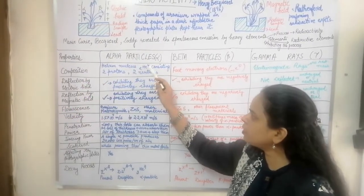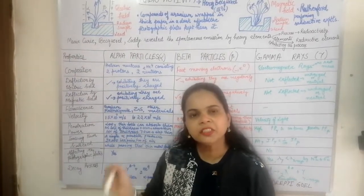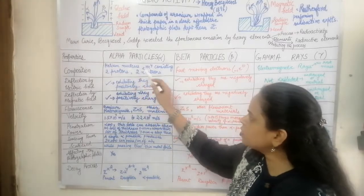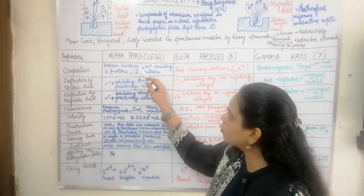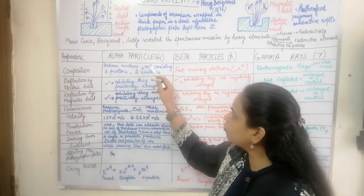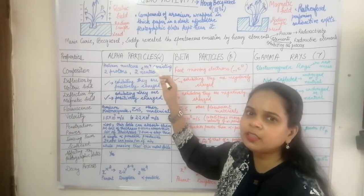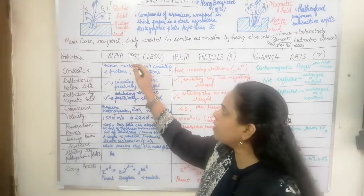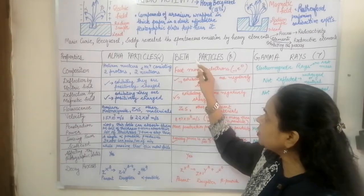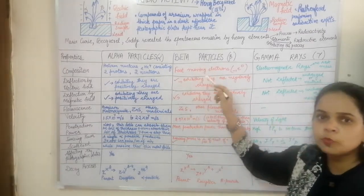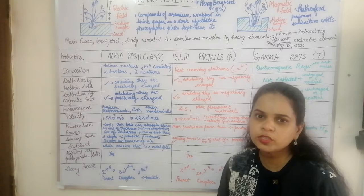In the helium nucleus, the atomic number 2 represents the number of protons, and the mass number 4 is the sum of protons and neutrons, giving 2 neutrons. So the alpha particle is the helium nucleus consisting of 2 protons and 2 neutrons. Beta particles are fast-moving negatively charged electrons, while the alpha particle is positively charged.